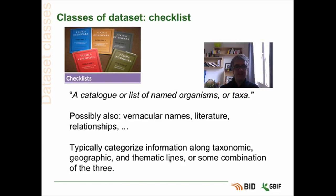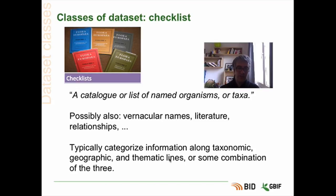The second class of dataset that we can publish at GBIF is the checklist. A checklist is a catalogue or list of named organisms or taxa. Here, the main entity we are describing is a taxonomic concept. A taxonomic concept will probably have fields for things like scientific name, an author, or status, but possibly also other things like vernacular names, literature information, or relationships between different taxa. It typically categorizes information along taxonomic, geographic, and thematic lines, or a combination of those.